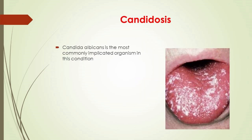Candidosis: Candida albicans is the most commonly implicated organism. It is carried in the mouth of about 50% of the world's population as a normal component of the oral microbiota. This carriage state is not considered a disease, but when Candida becomes pathogenic and invades host tissues, oral candidosis can occur. This usually constitutes an opportunistic infection due to local, mucosal, or systemic factors altering host immunity.